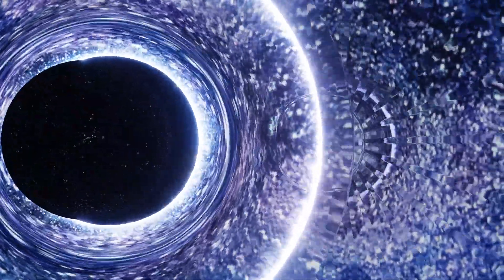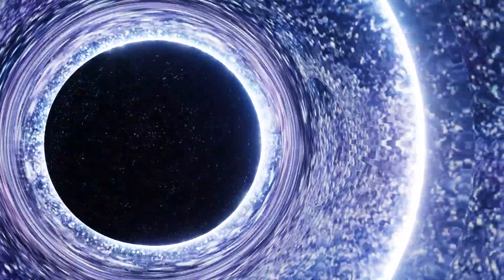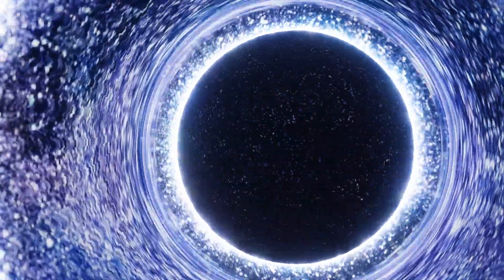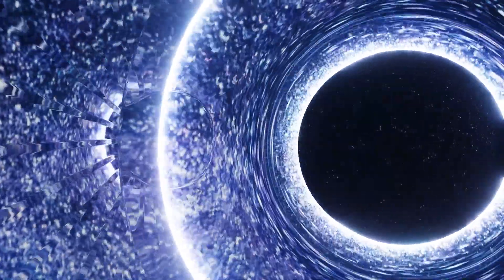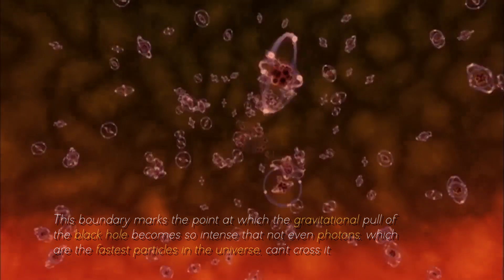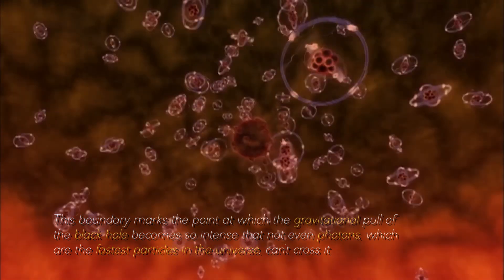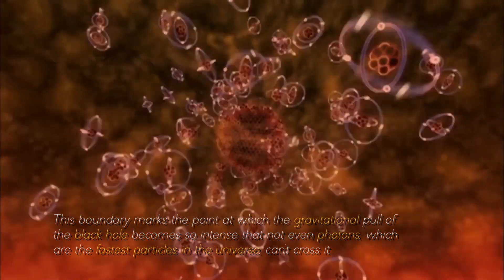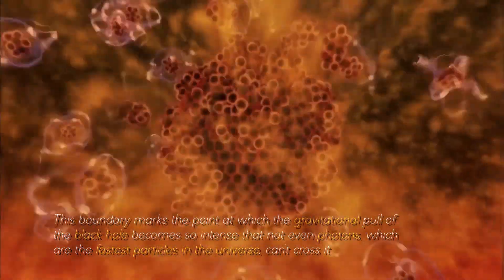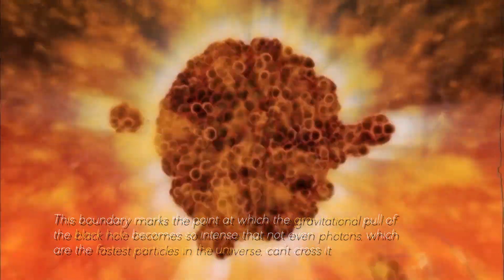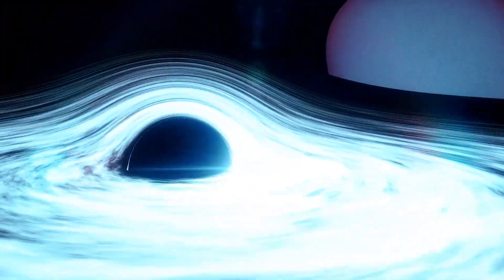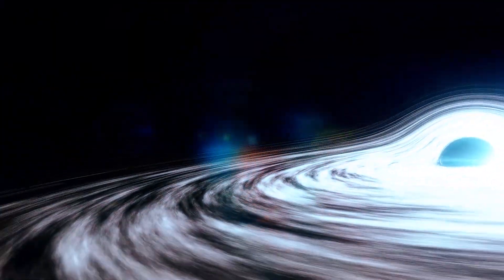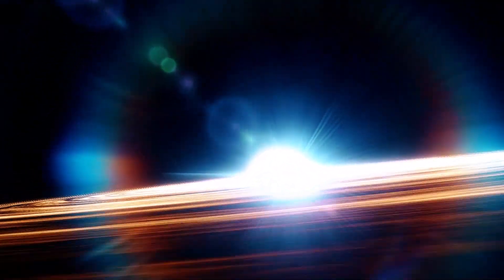A fundamental characteristic of a black hole is its event horizon, an invisible boundary beyond which escape becomes impossible, even for light. This boundary marks the point at which the gravitational pull of the black hole becomes so intense that not even photons, which are the fastest particles in the universe, can cross it. Any object or radiation that crosses the threshold is inexorably pulled toward the singularity at the heart of the black hole, a destination of no return.